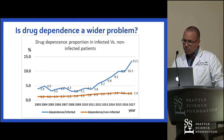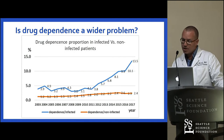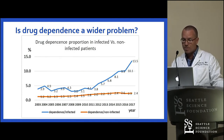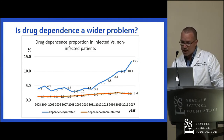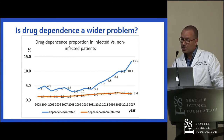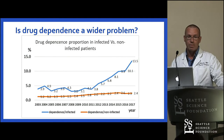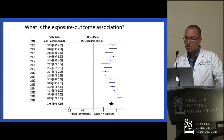By performing an analysis in the non-infected patients, we were also able to ask whether drug dependence is a wider problem. The orange graph shows that there was certainly an increase, but to a lesser extent compared with the increase among infected patients. So that's probably a wider problem of drug dependence throughout Washington State.